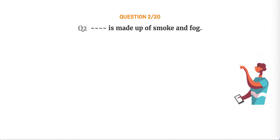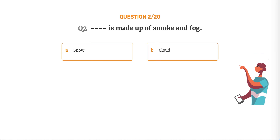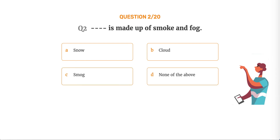Question number 2. Dash, made up of smoke and fog. Option A, Snow. Option B, Cloud. Option C, Smog. Option D, None of the above.